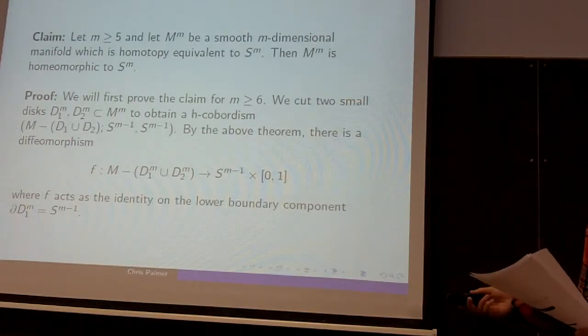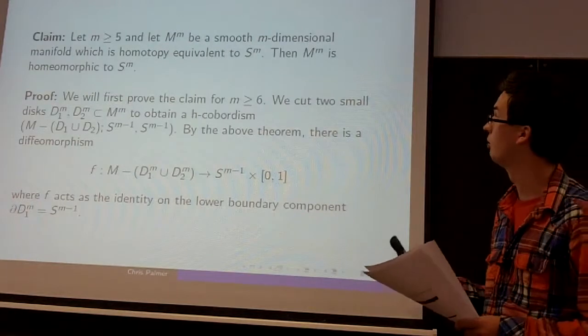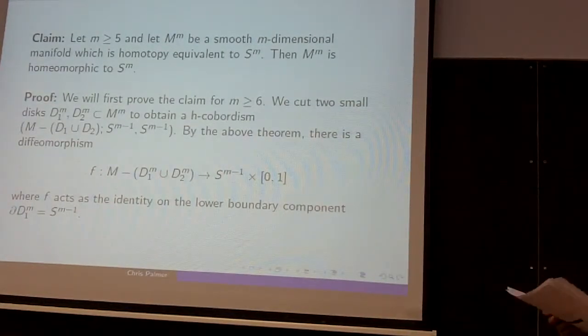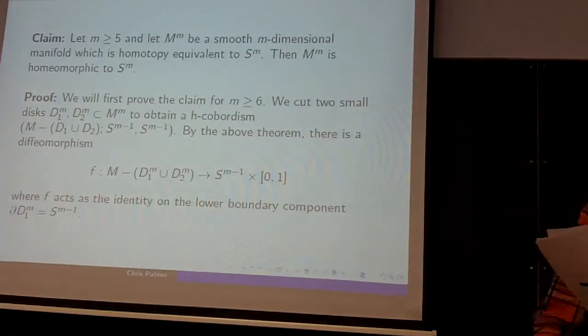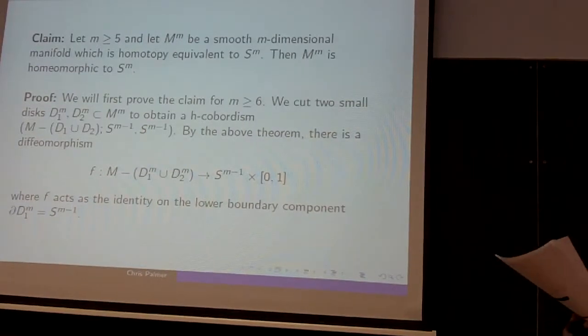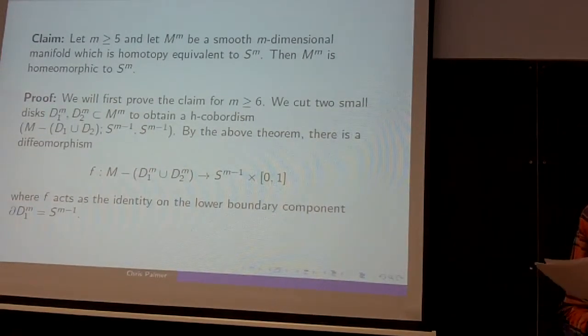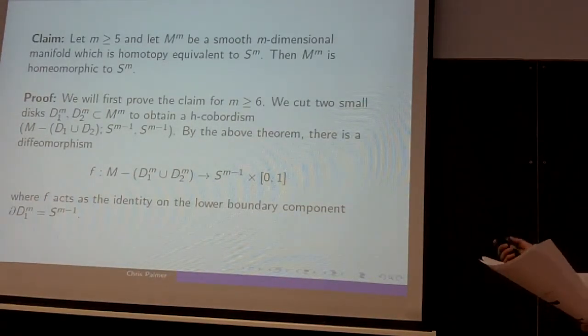So here's a very interesting result we can derive immediately from the H-cobordism theorem. It's the so-called high-dimensional Poincaré conjecture. The claim is that if M is a smooth manifold of dimension at least 5, which is homotopy equivalent to S^m, then in fact these two guys are homeomorphic. So we'll look at the proof.